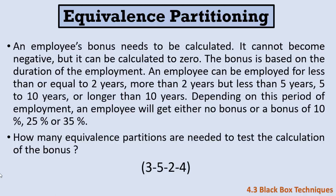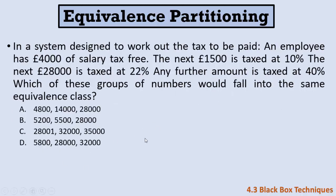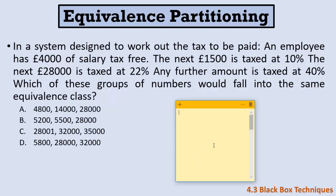How many equivalence partitions are needed to test the bonus calculation? We have four partitions: zero to two, two to five, five to ten, and more than ten. To design test cases, we pick one value from each: for example, one year, four years, seven years, and thirteen years. These four values cover all partitions.